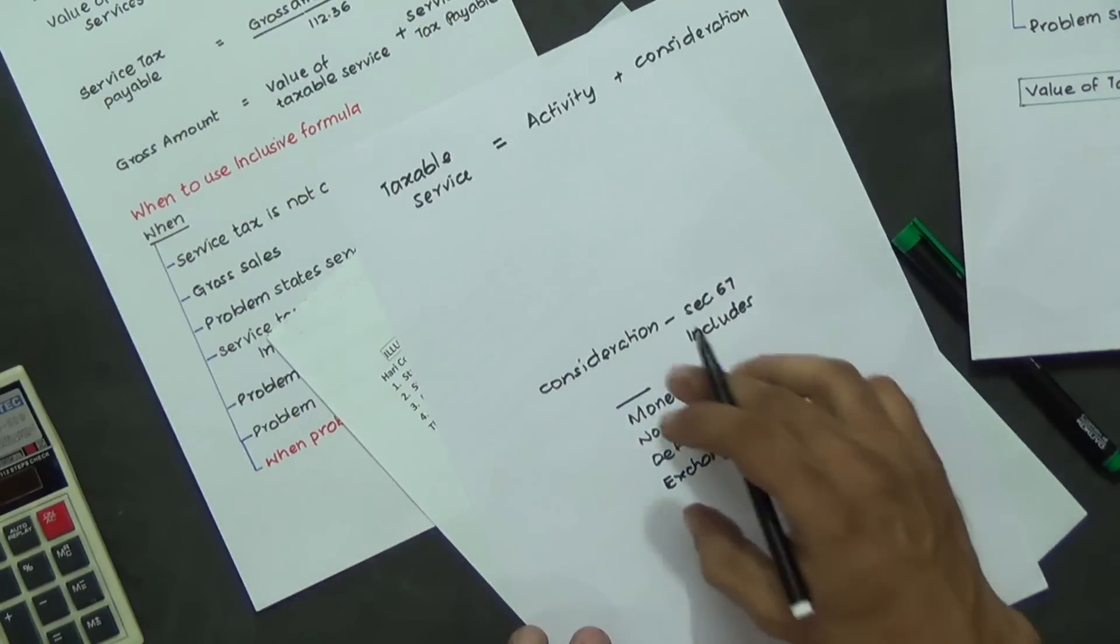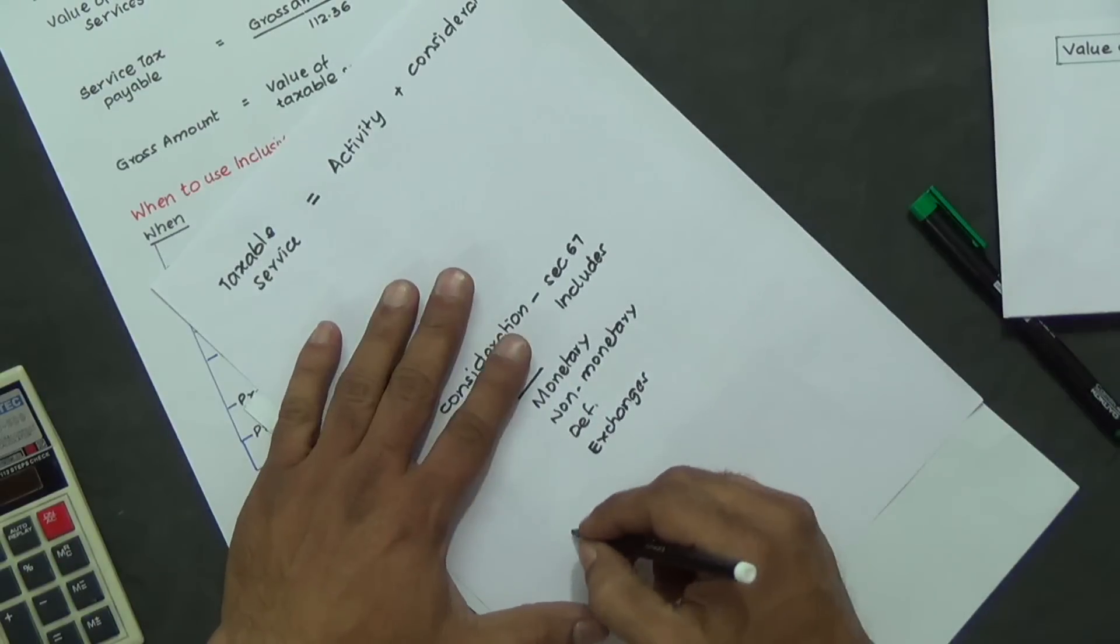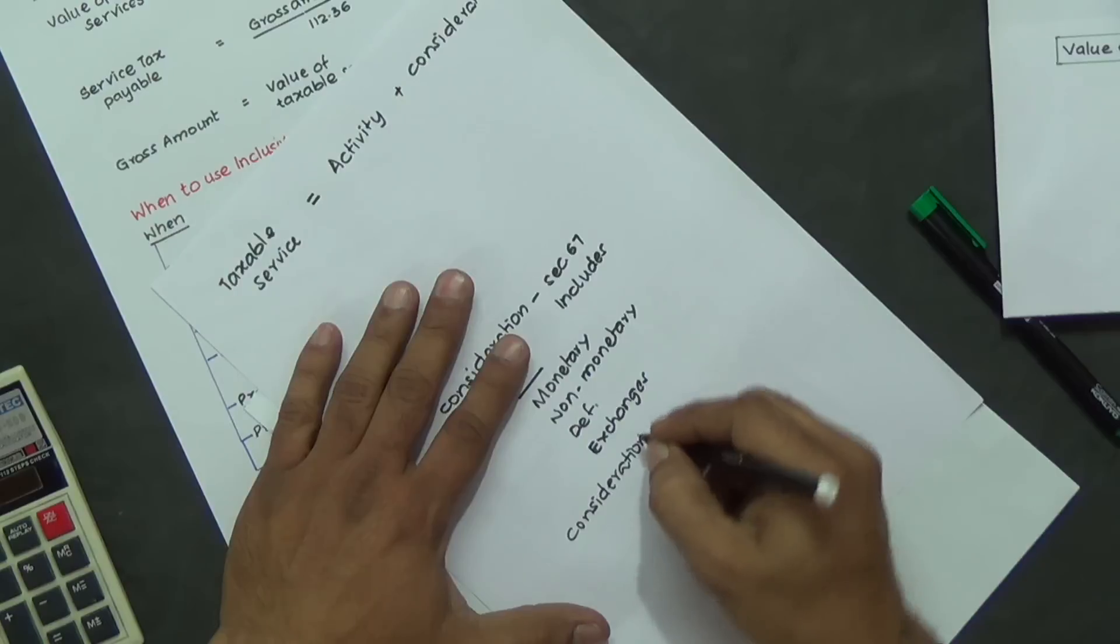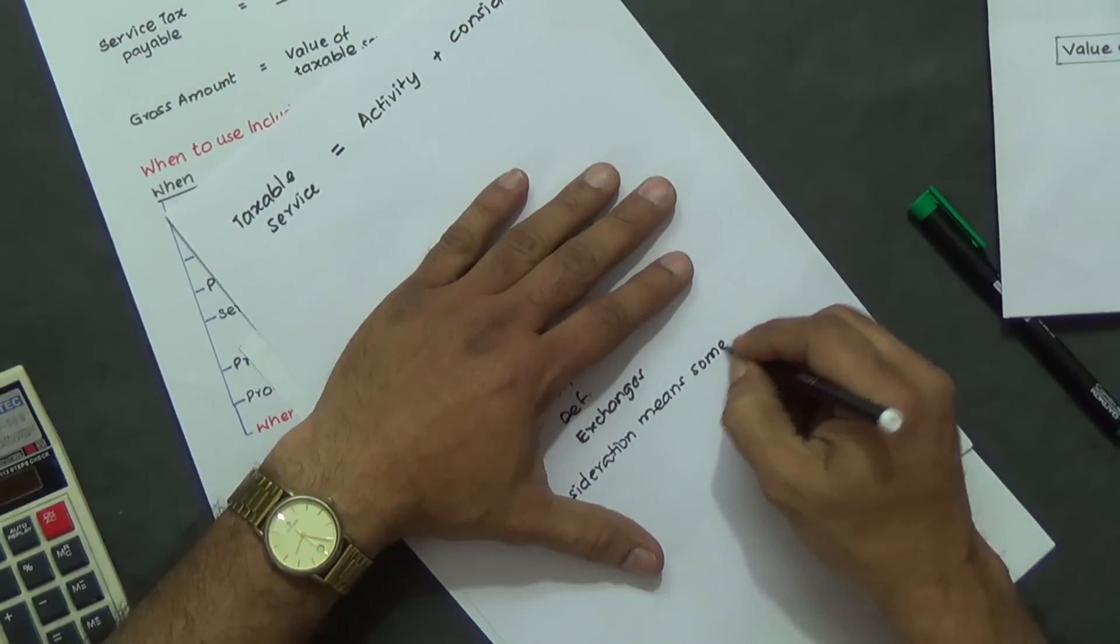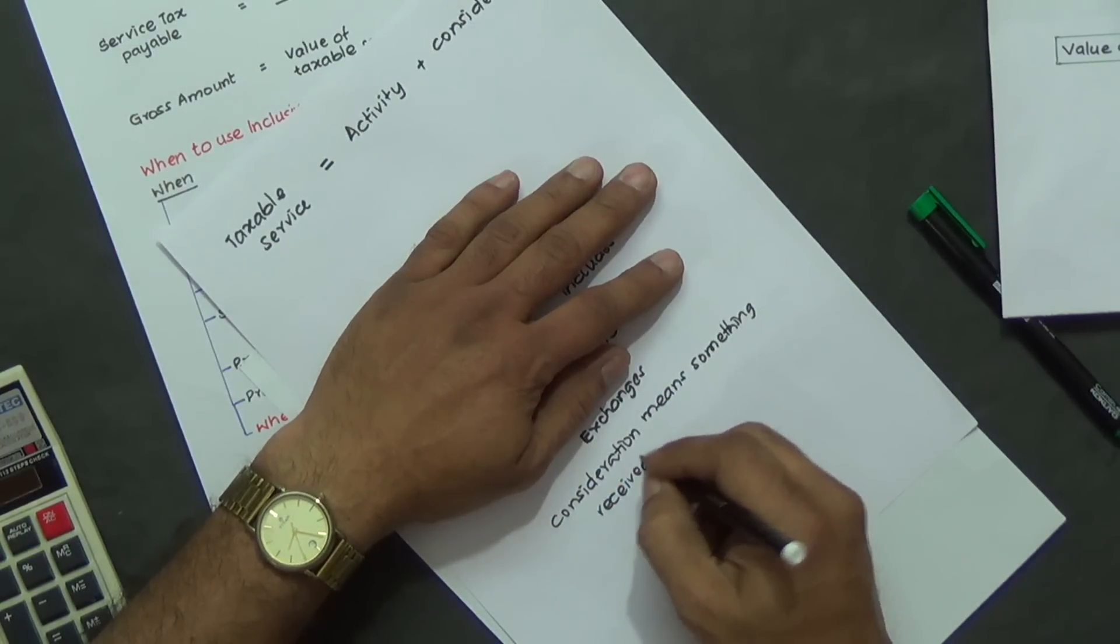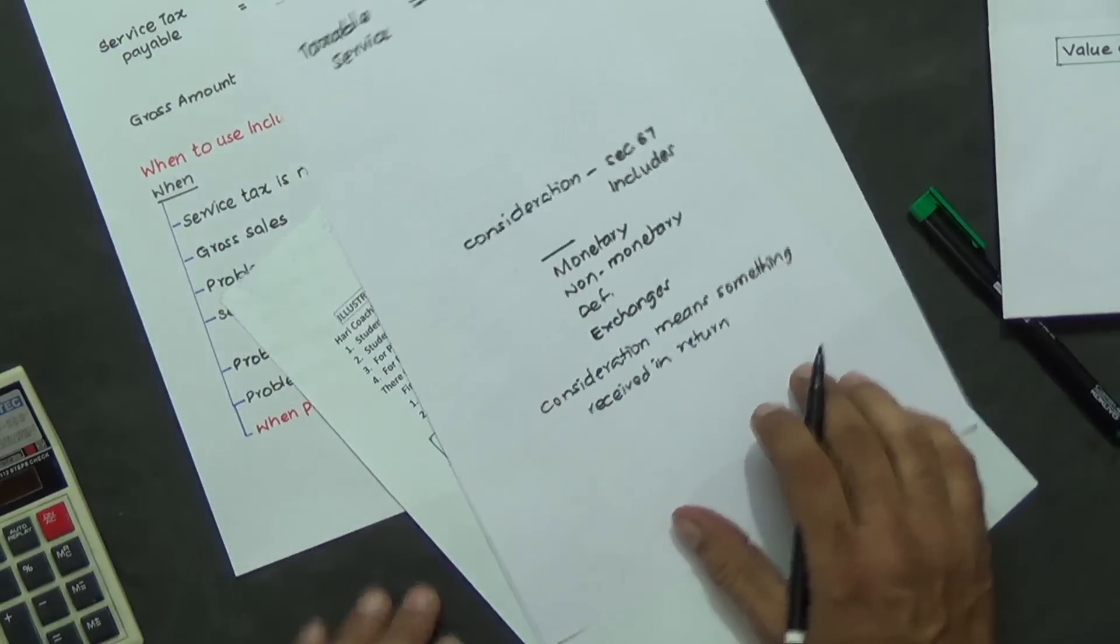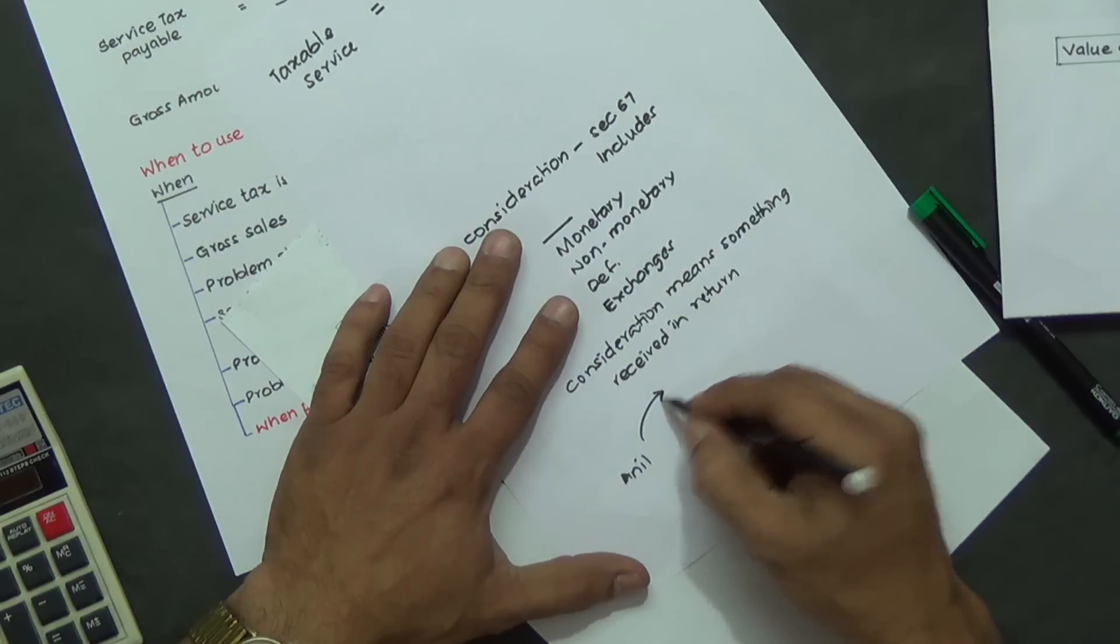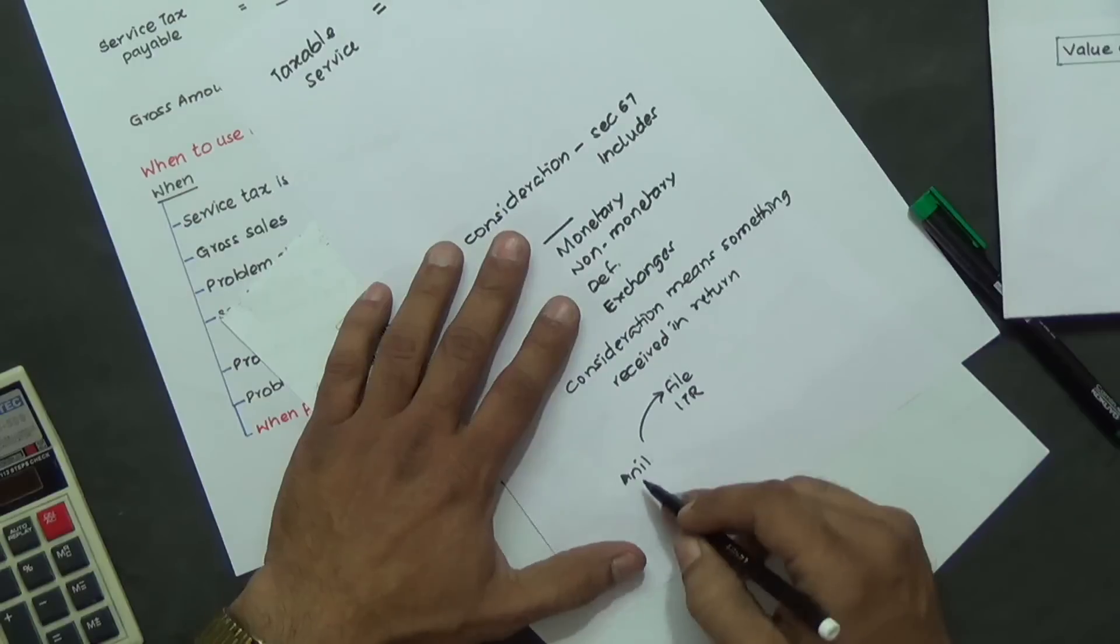In short, consideration means something given in return. I'll explain this through an example. Anil gives files income tax returns. Anil is a CA, he files income tax returns to Ram. Ram is an engineer.